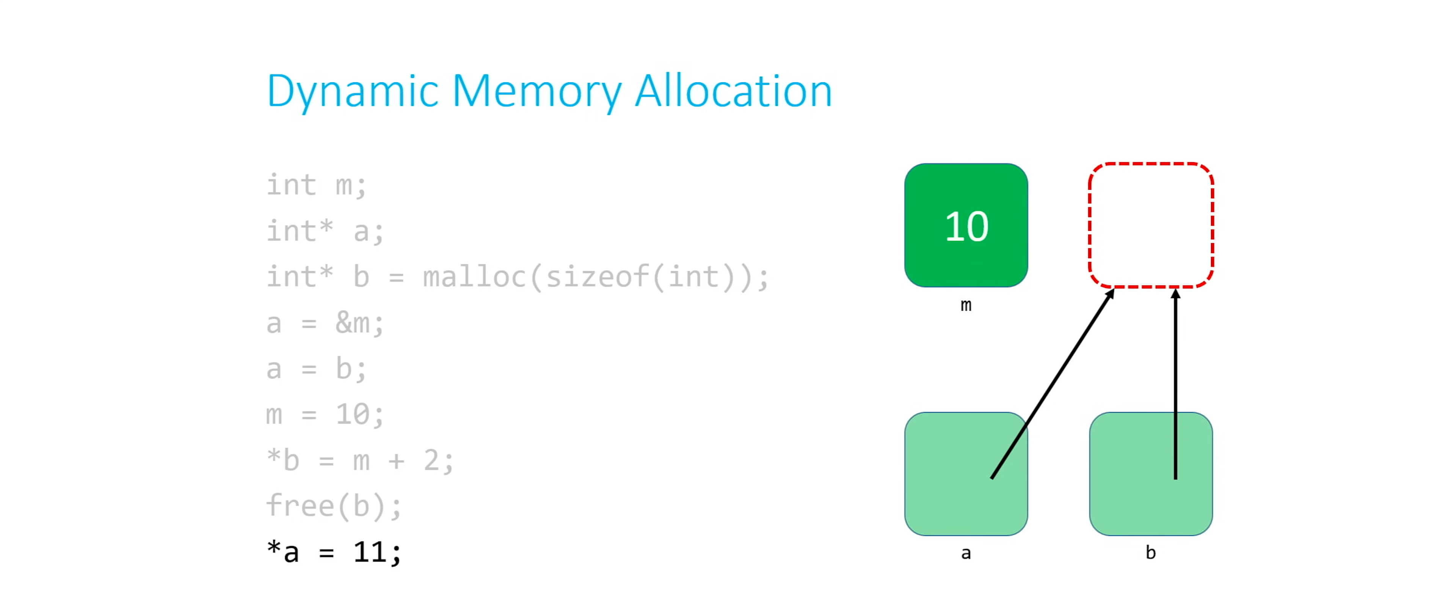We don't know. We might get a segmentation fault because we're touching memory that we're no longer, we don't have right privileges to anymore. You might get away with it. Depends on where that memory happened to live on the system. But it's unpredictable.